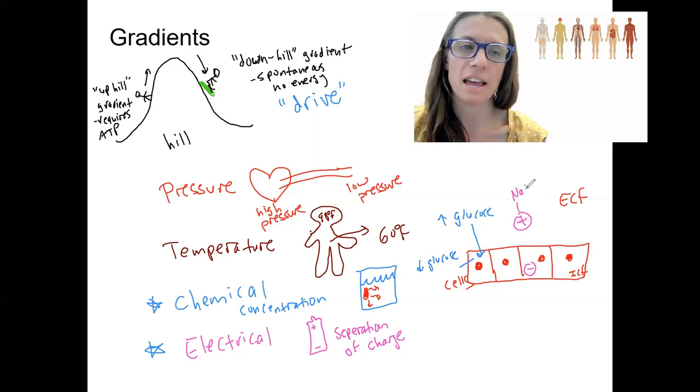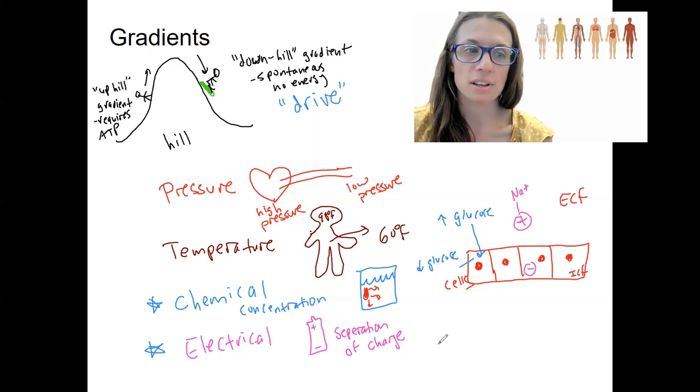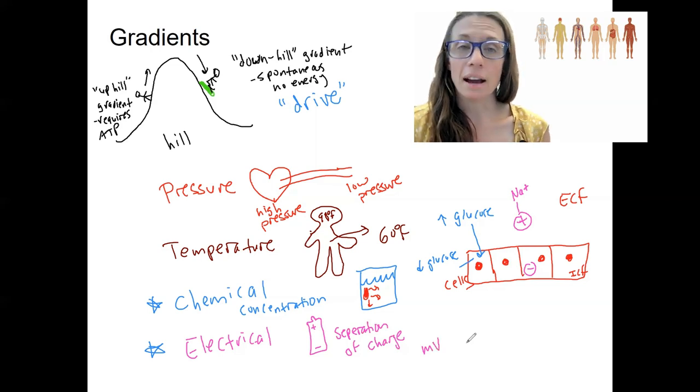Like literally what is making it positive is ions. For example, one of the positive ions is Na plus sodium. But the point here is that this gradient exists. It's an electrical gradient that's going to be measured in millivolts in our case.